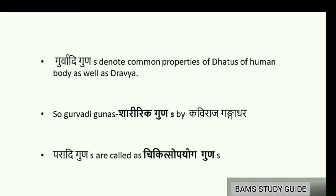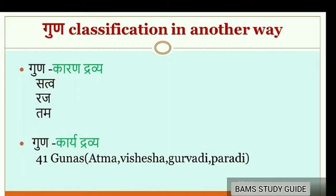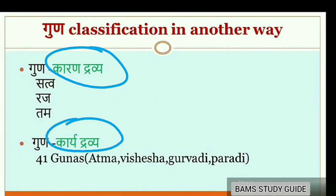Parādhi Gunas are essential for treatment, so they are called Chikitsopayoka Gunas. Another way of classification of Gunas is as Karanadravya — that is Sattva, Raja and Tama — and Karyadravya, that is 41 Gunas including Atma, Vaishishika, Gurvādi and Parādhi Gunas.